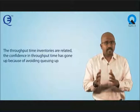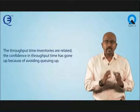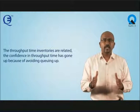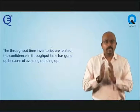Throughput time and inventories are related. My confidence in throughput time has gone up because I am going to avoid queuing up. But I have only taken care of one aspect of throughput time — the blockages part. Disruptions to flow are also quality related, and these will be clubbed together and called Murphy, and my priority system is going to help me monitor this.